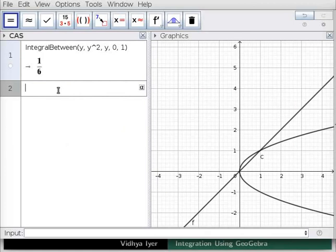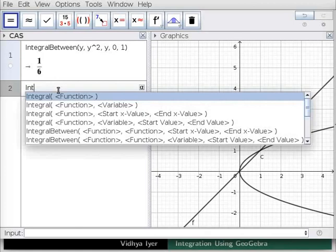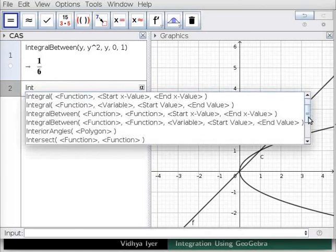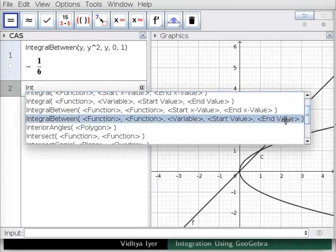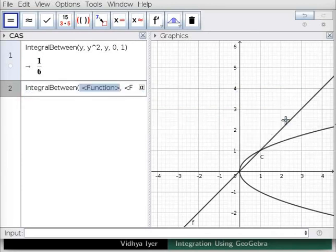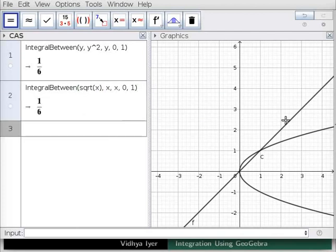In CAS view, type int capital I and choose the same option from the menu as before. Now let us reverse the order of functions and limits. Type the following and press enter. You can also use the input bar instead of the CAS view.